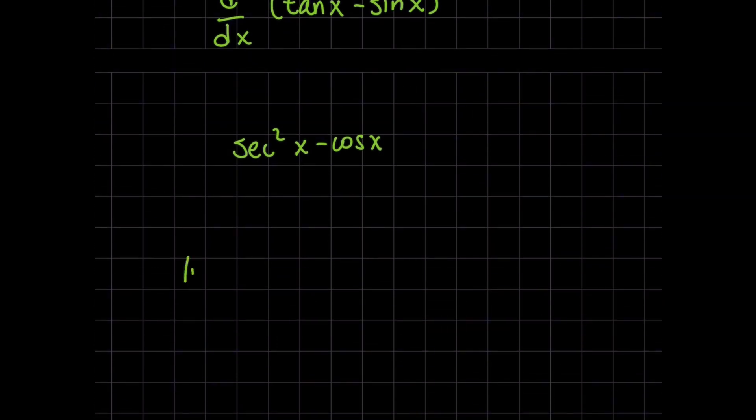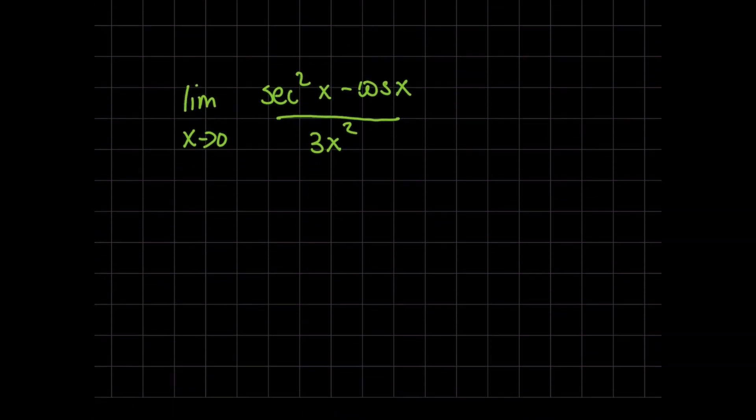I'm going to rewrite the new limit as this new expression where on the top, after finding our derivative, we've got secant squared of x minus cosine of x, and this is going to be all over 3x squared. Now you always want to make sure to check whether or not you end up with another indeterminate form. If I were to plug in zero here, I would get secant squared of zero minus cosine of zero, so the top is going to simplify to zero.